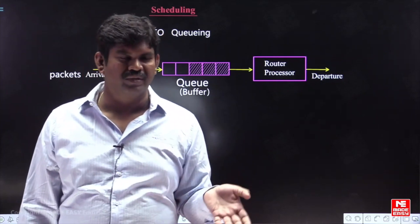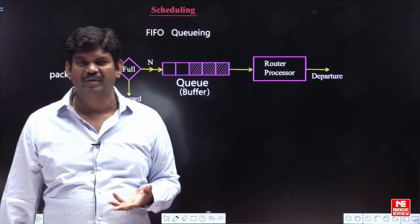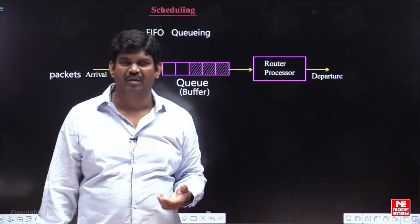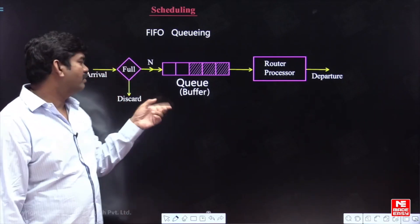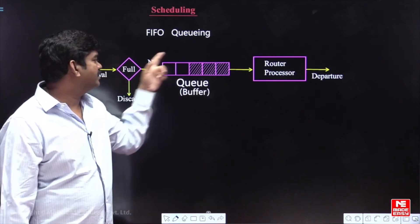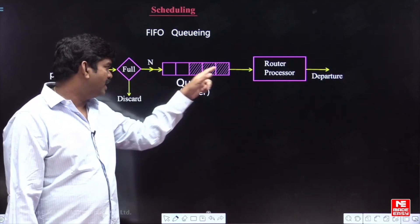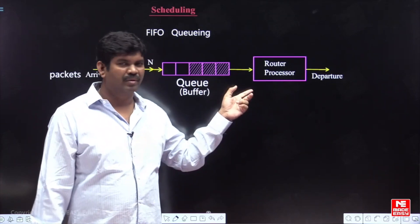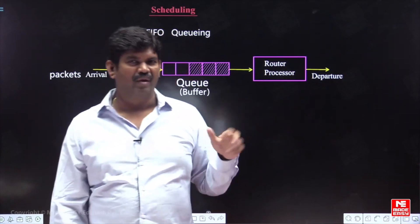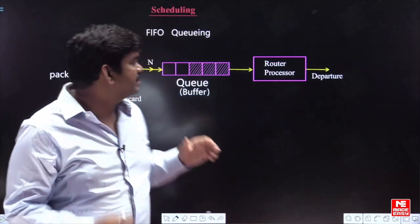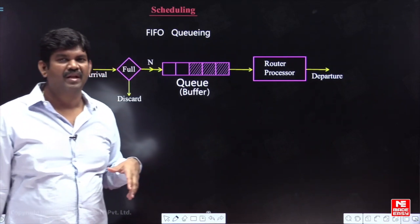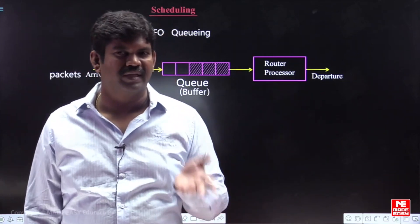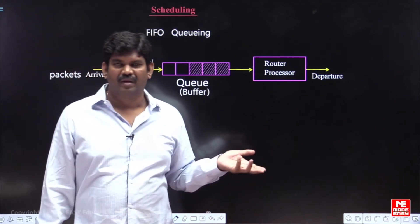But let us take an example — if it is something like a video conferencing call, the application is a video application. If the application is video, the delay should be minimum so that the video signal will go to the other end and the destination can clearly see the video conferencing call. But in FIFO scheduling implemented by the router, the ending packets take so much time — until the starting packets have been forwarded, the ending packets cannot be forwarded. So if the waiting time is more and video packets are reaching the destination after a long time, that is not practical. So if the application demands a video application, the FIFO algorithm is not suitable. For remaining applications like SMTP or FTP you can go for FIFO, but not for video applications.